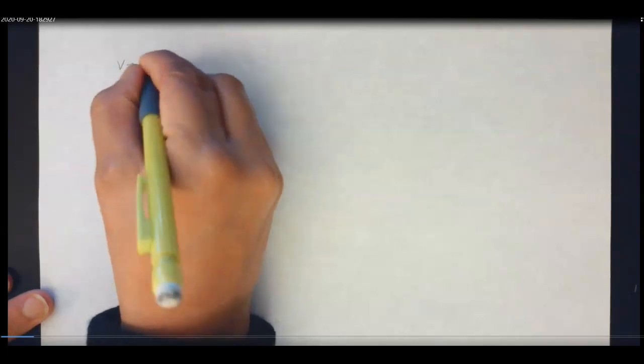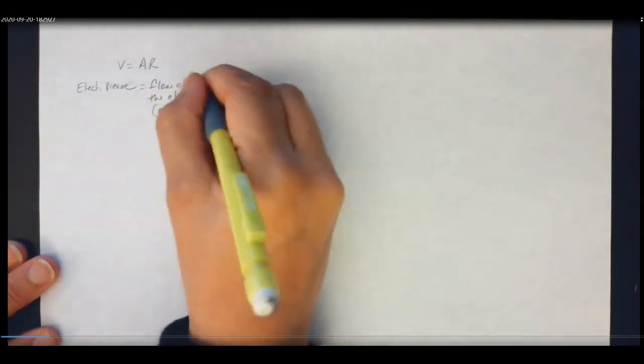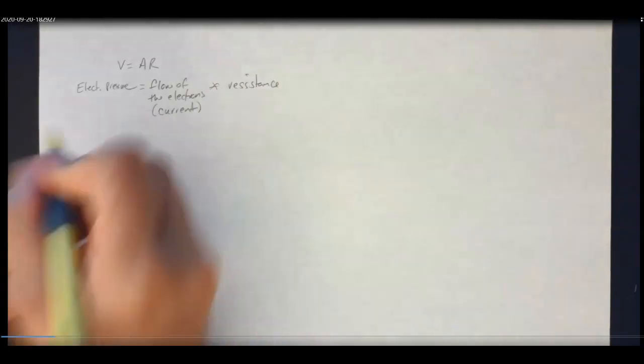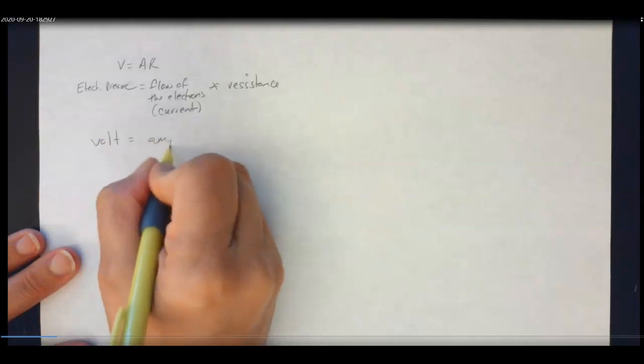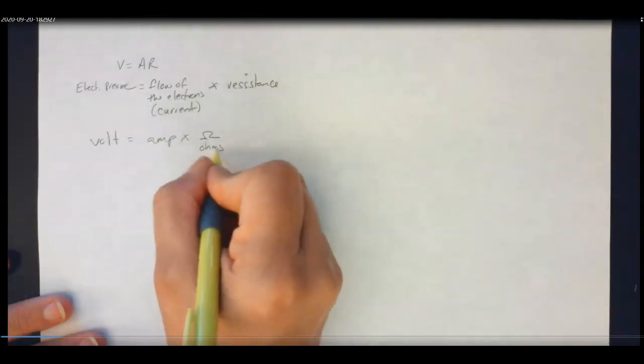So let's just begin. We'll do this first one with the circuit. Let's just remember, we say, alright, voltage equals amperage times resistance, where voltage is our electrical pressure and amperage is the flow of the electron, which we also call current, times resistance. So they're measured in volts, amps, and ohms.